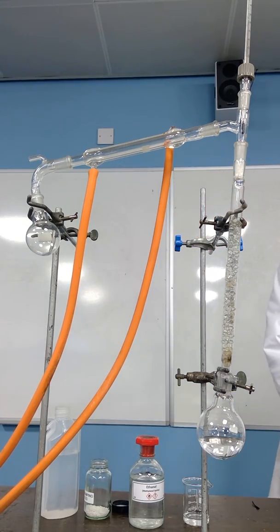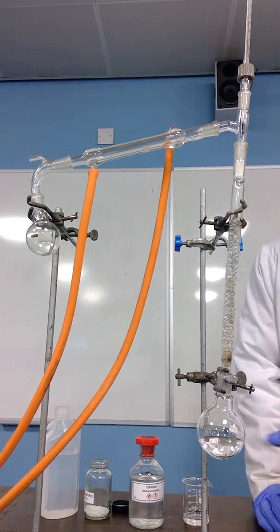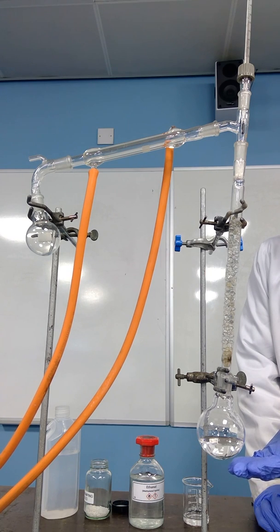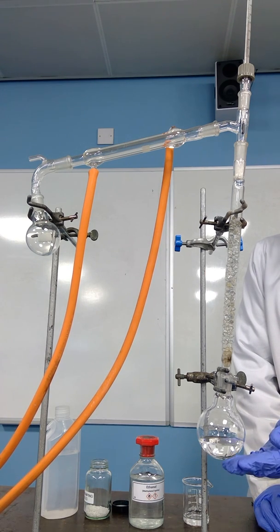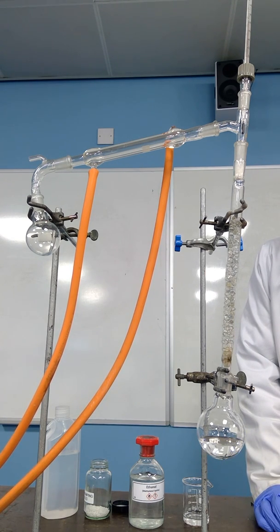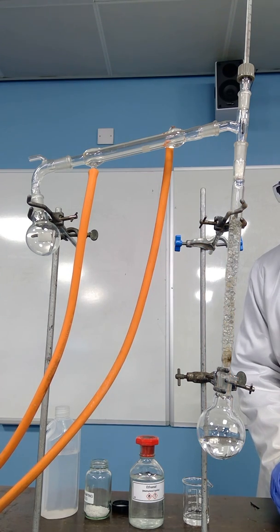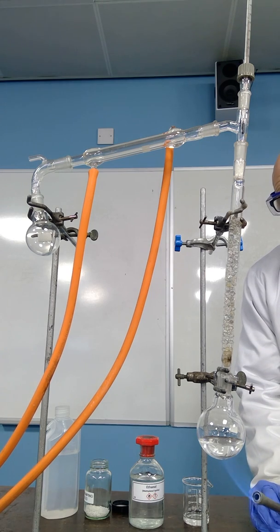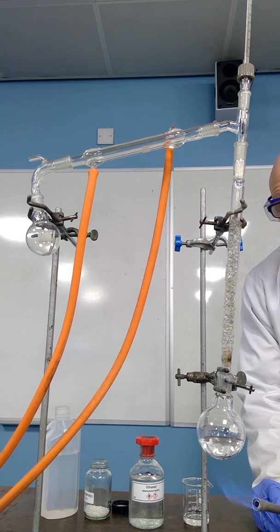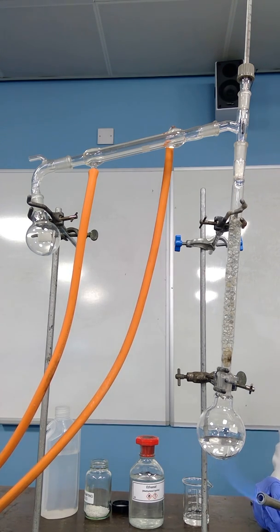Now if I was being absolutely safe I would warm this with a hot water bath or with a heating mantle, but for speed of reaction I'm going to use a Bunsen, although we do have flammable materials available. So using the Bunsen I'm going to warm this mixture of the ethanol and water.